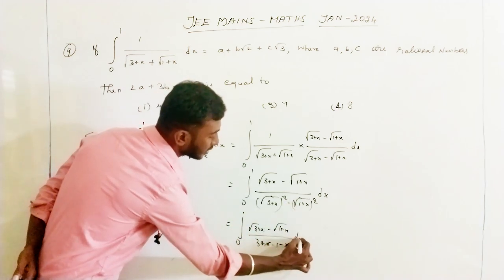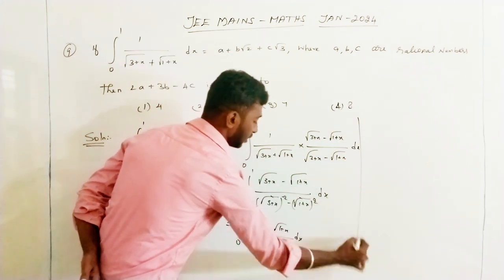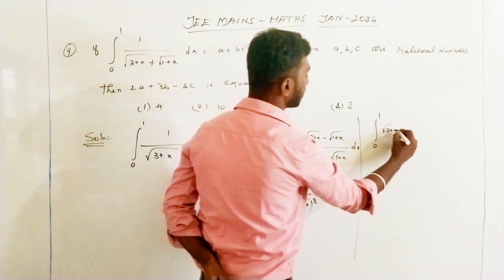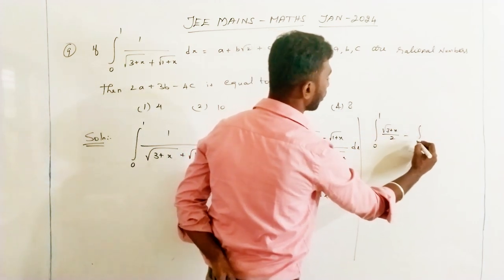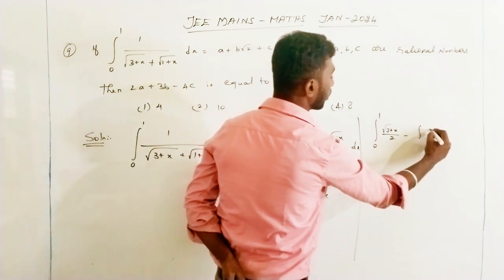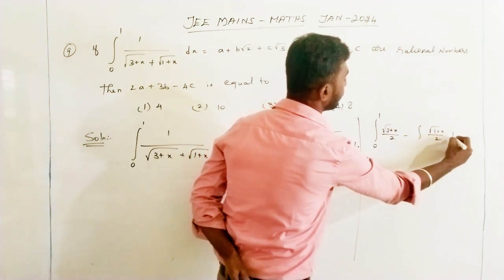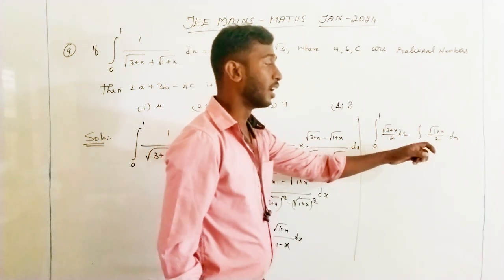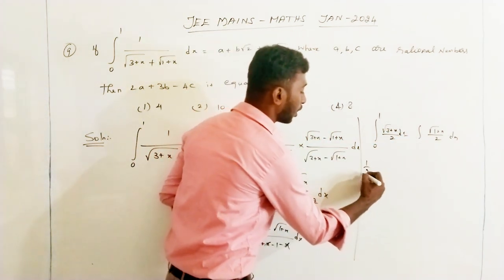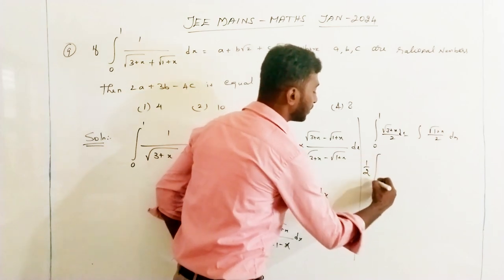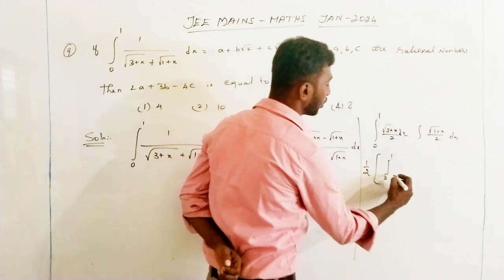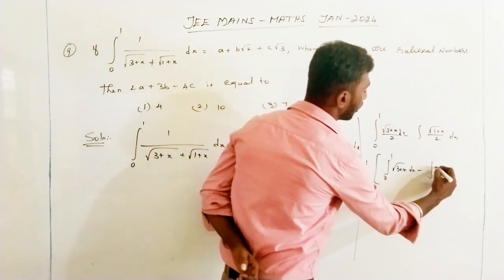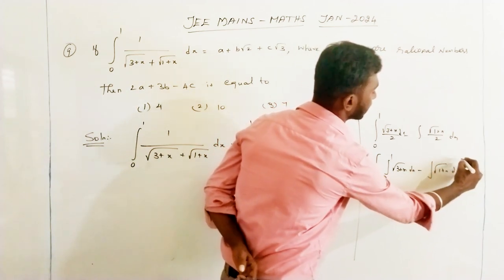The x terms cancel in the denominator, giving 3 plus x minus 1 minus x equals 2. So we get the integral over 0 to 1 of root of (3+x) minus root of (1+x), all divided by 2 dx. Taking 1/2 as common outside, we have 1/2 times the integral over 0 to 1 of root of (3+x) dx minus the integral of root of (1+x) dx.